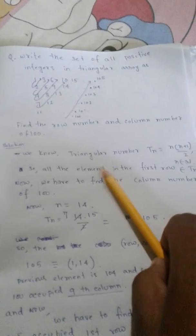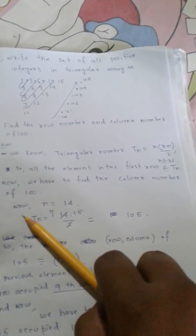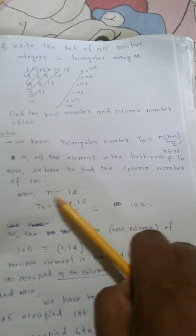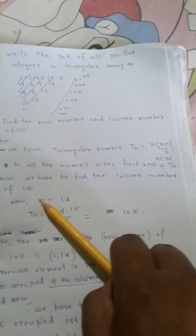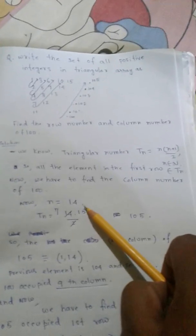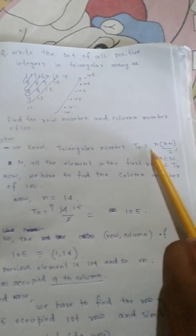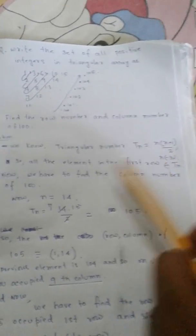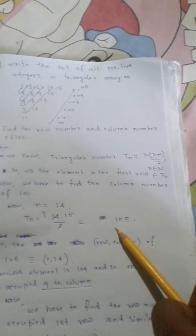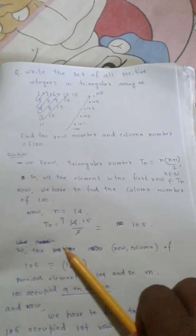We have to find the column number of 100. We put in the value n=14, so T(14) equals 14 into 15 by 2. We get 15 from 14+1, since T(n) = n(n+1)/2. So 14 into 15 by 2 gives 7 into 15, which equals 105. So the row and column of 105 equals (1, 14).